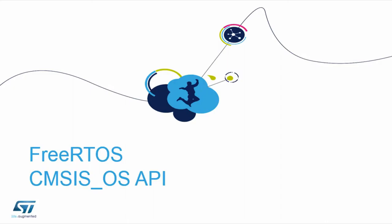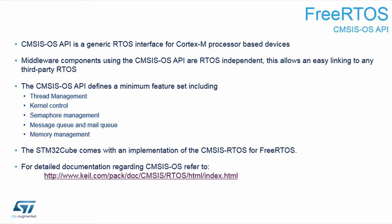So they created their own API that takes the common functions from these real-time operating systems. First, it was implemented on top of the RTX, which is an in-house operating system created by Keil, belonging to ARM now. Then it was implemented on the FreeRTOS and it became a de facto standard for Cortex-M based devices. It's also very nice and easy to use — a generic interface for Cortex-M based processors that uses some middleware components independent from RTOS, and allows easy transfer from one RTOS vendor to the other.